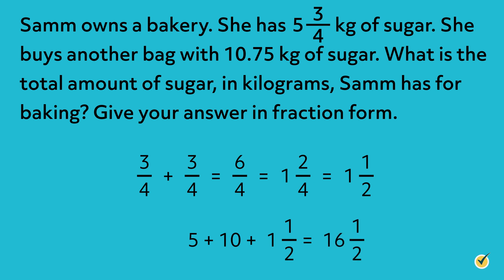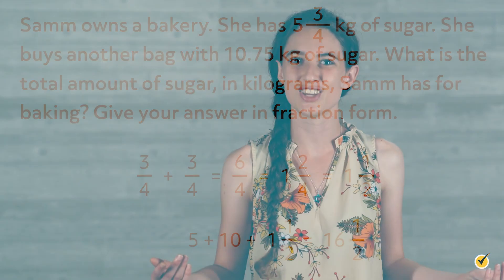So Sam has 16 and 1 half kilograms of sugar for baking. I hope this video on converting decimals and improper fractions in mixed numbers was helpful. Thanks for watching and happy studying!